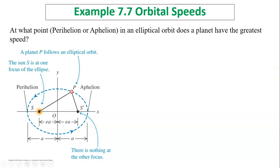Example 7.7, orbital speed. The question is at which point, the perihelion or aphelion, in an elliptical orbit does a planet have greatest speed? We just talked about it, right? It's perihelion. This is because of the second law, Kepler's second law, or we can use conservation of energy to explain that.